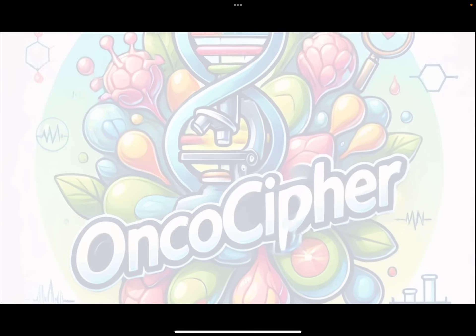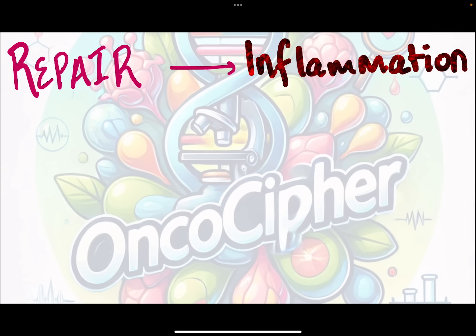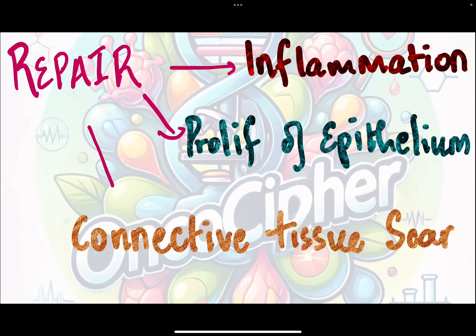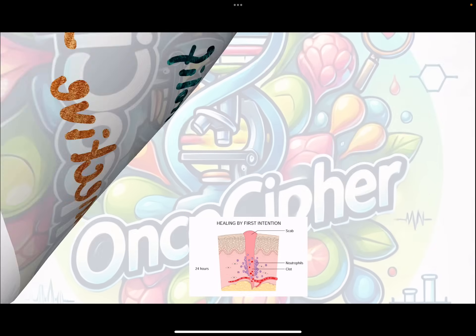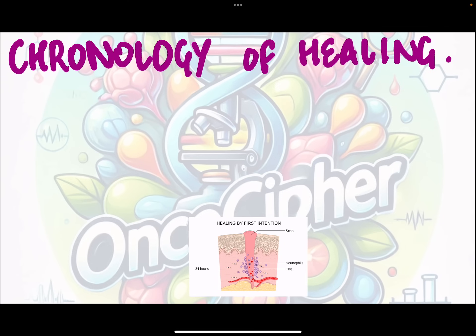Repair occurs in three stages: first, inflammation; followed by proliferation of the epithelium; and finally, connective tissue scar formation. We need to know the chronology of primary intention healing, which is extremely important.